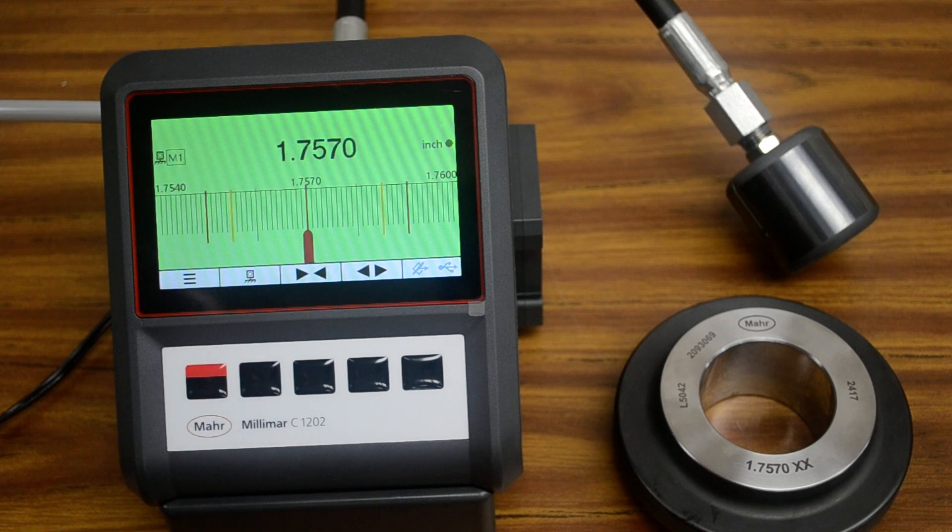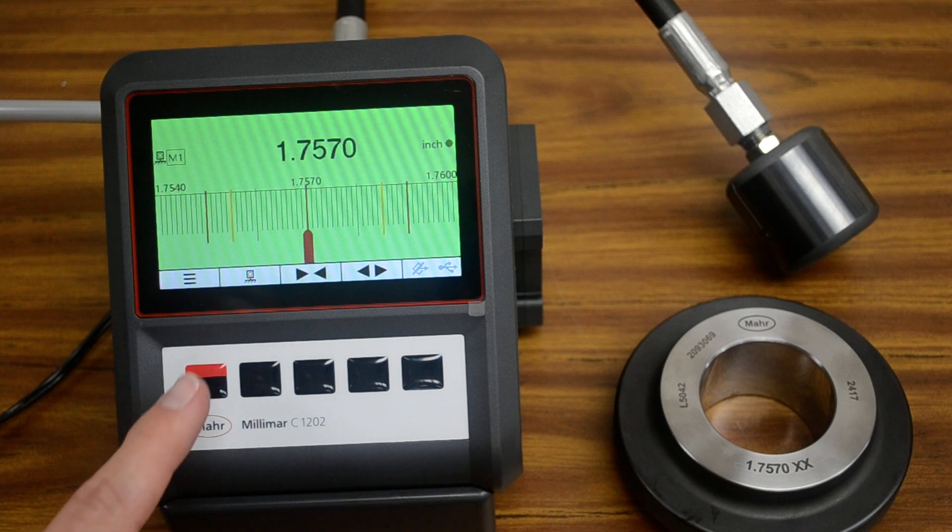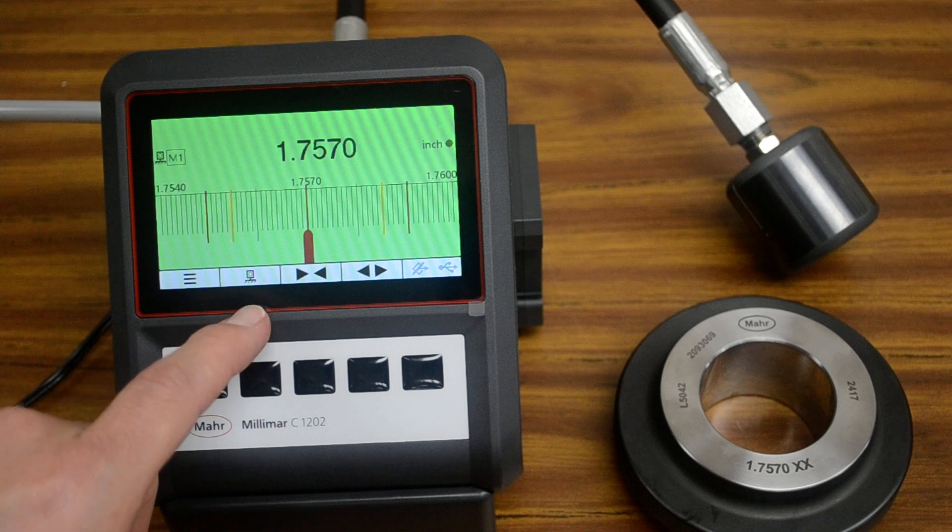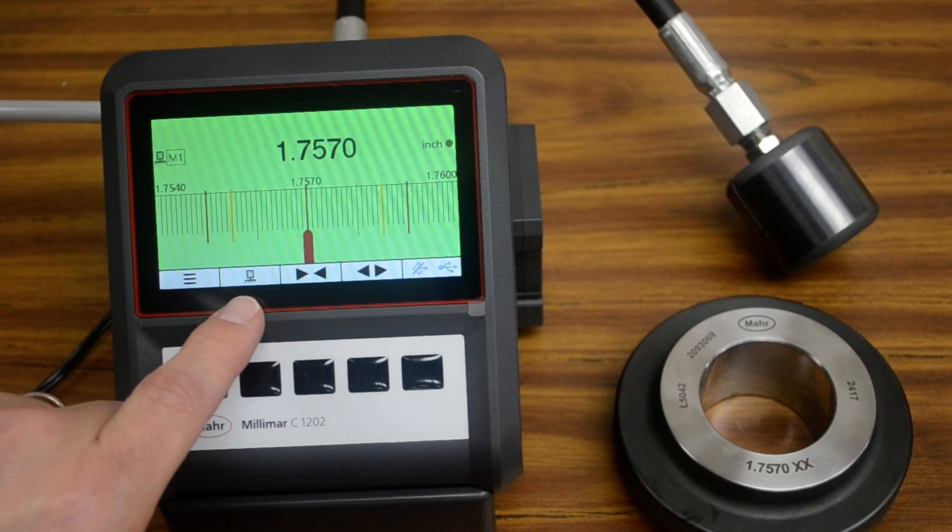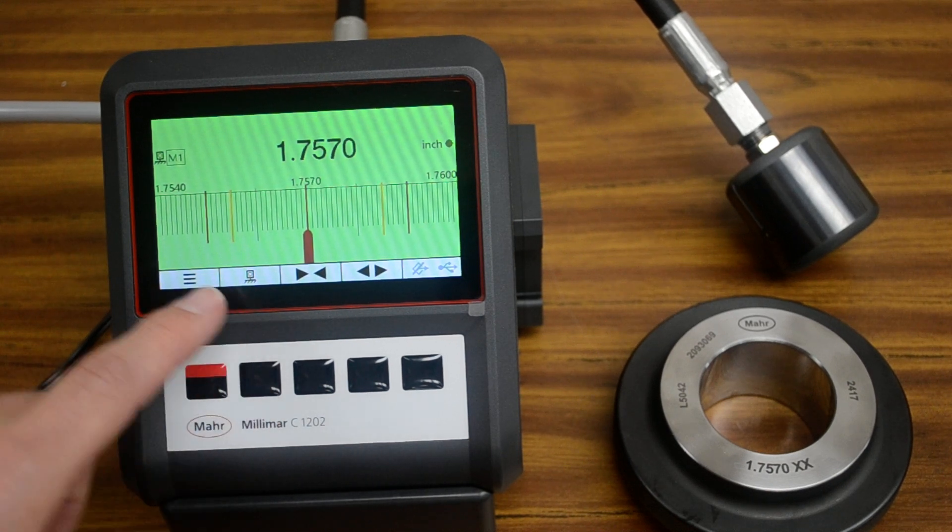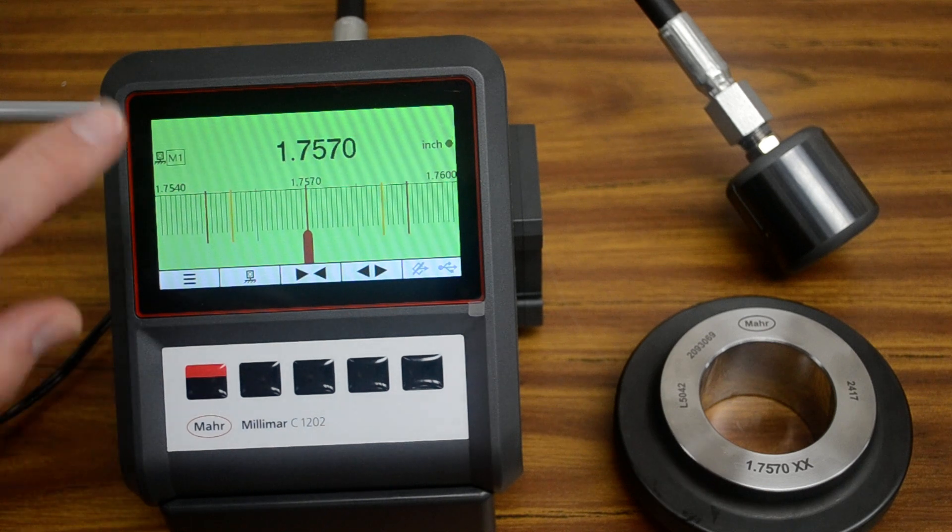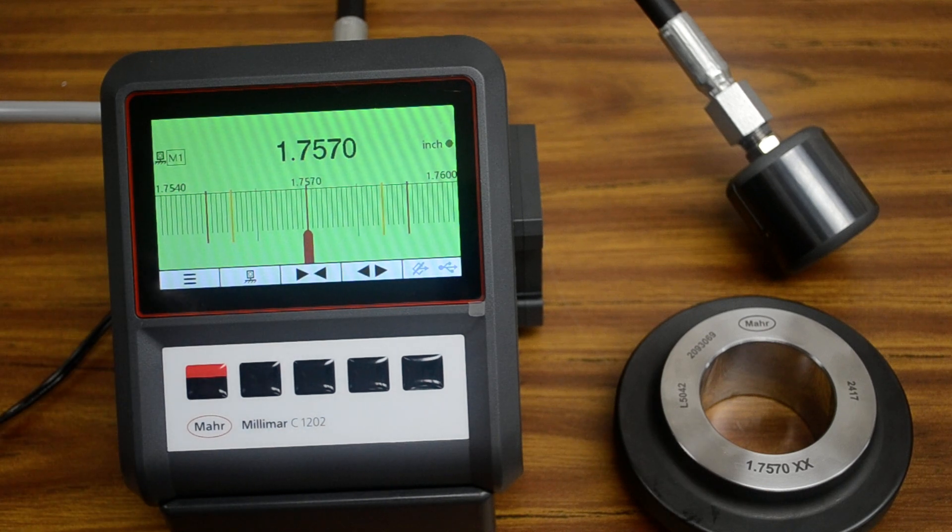So we're going to turn on the air, and we're going to put the plug into the master, and then we will master it, or zero it, however you want to refer to it, with this datum symbol here. And you can see we've already done it, but we're going to do it again in a minute. So we're going to go ahead and connect the air.